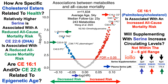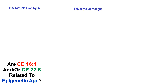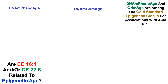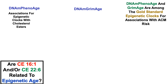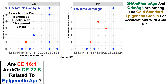So how are CE 16:1 and CE 22:6 related to epigenetic age? To assess epigenetic age, we'll look at DNA methylation using the PhenoAge and GrimmAge tests — two gold-standard epigenetic clocks for their associations with all-cause mortality risk. We'll look at associations between these clocks and specific cholesterol esters.